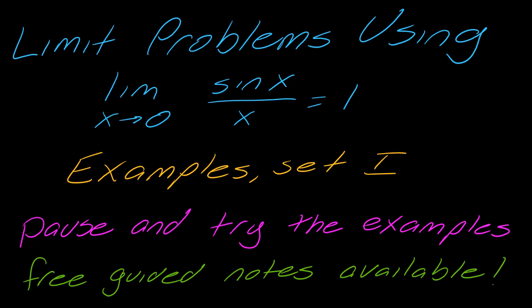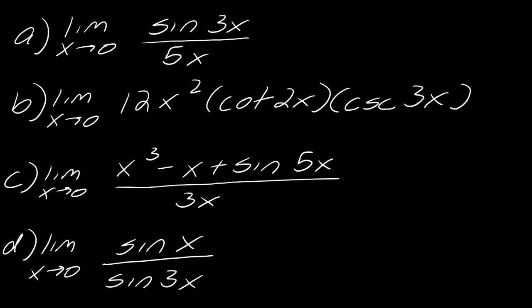Hey guys! In this video we're just going to look at a bunch of different examples using the theorem: the limit as x approaches 0 of sine of x over x equals 1. Sometimes these can be kind of tricky, so let's just get right into them. These are the four problems I'm going to do. I do have another video with slightly trickier problems — these are a little more straightforward. You can fast forward to the one you're looking for, or use this as a way to quiz yourself since all the solutions are here.